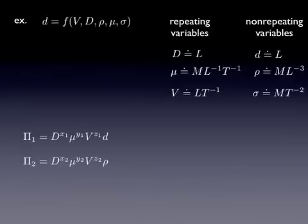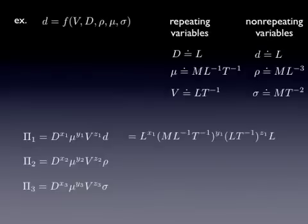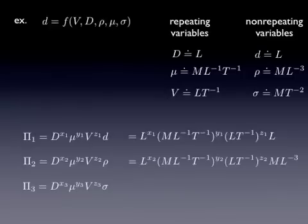You can do the same thing with pi2 and the same thing with pi3. These have rho and sigma in them, and then also the repeating variables with the exponents. If we then extend that to the units, those exponents are carried through the units. We can rewrite this equation in terms of the units. We do that for all three pi's.